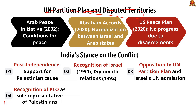Peace initiatives from the 2000s: the Arab Peace Initiative saw the Arab League endorse a Saudi Arabia proposal to establish normal relations with Israel in exchange for an independent Palestinian state. This included the withdrawal of Israel from territories occupied in 1967 including the Golan Heights, settlement of Palestinian refugees, and recognition of East Jerusalem as the capital of an independent Palestinian state.